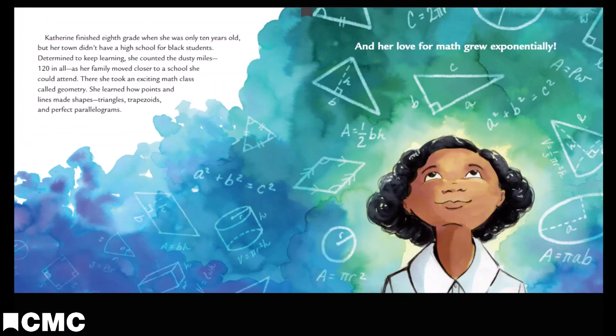Catherine finished 8th grade when she was only 10 years old, but her town didn't have a high school for black students. Determined to keep learning, she counted the dusty miles, 120 in all, as her family moved closer to a school she could attend. There, she took an exciting math class called geometry. She learned how points and lines made shapes—triangles, trapezoids, and perfect parallelograms. And her love for math grew exponentially.